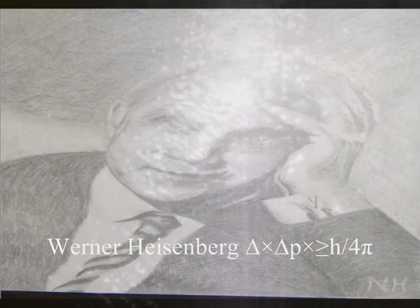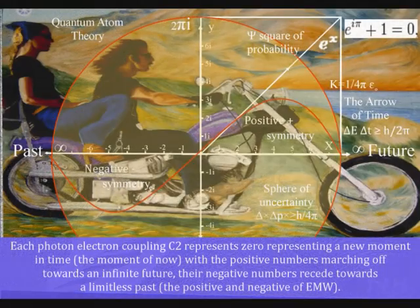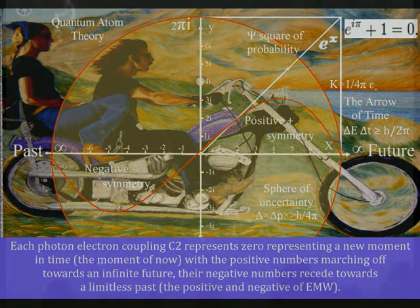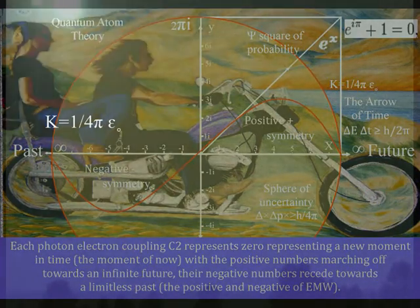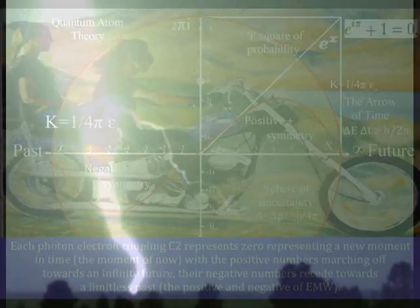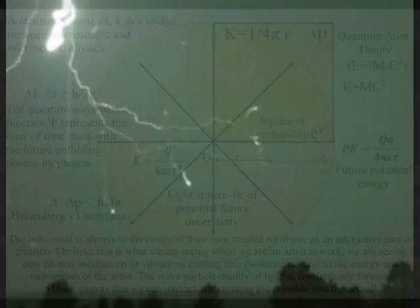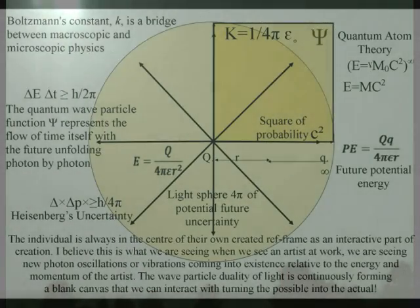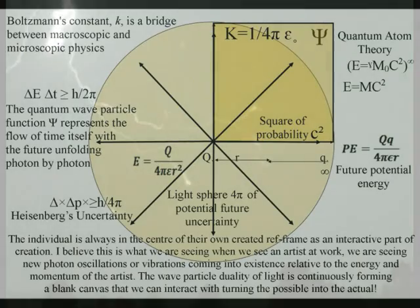This uncertainty can be seen mathematically as Heisenberg's uncertainty principle of quantum physics. This might sound mad, but the probability function that forms the uncertainty principle also forms the movement of electric charge, forming the flow of electric current with electrical potential. In this theory, electrical potential and the individual's future potential are the same within their own reference frame.